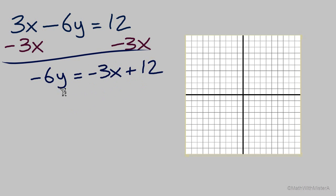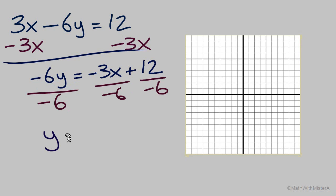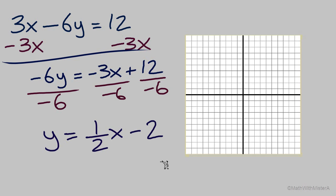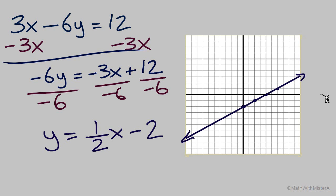But we're not there yet because we're not solved for y. We have one more step — divide every term by the coefficient negative 6. That will leave us with y equals negative 3 over negative 6, which simplifies to positive one half as the coefficient of x, and 12 divided by negative 6 equals negative 2. Now we'll plot the y-intercept at negative 2 and use the slope to see our vertical and horizontal change: vertical positive 1, horizontal positive 2 — up 1 over 2. And there's our graph for y equals one half x minus 2.